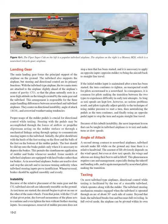Because of the CG placement aft of the main gear, tailwheel aircraft are inherently unstable on the ground. As taxi turns are started, the aircraft pivots on one main wheel, and the forward momentum continues to tighten the turn without further steering inputs. Removing rudder pressure does not stop a turn; opposite rudder is required to return to straight-line travel. If the initial rudder input is maintained after a turn has started, the turn continues to tighten — an unexpected result for pilots accustomed to nosewheels.